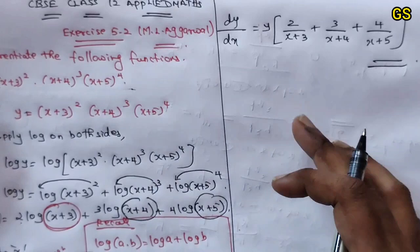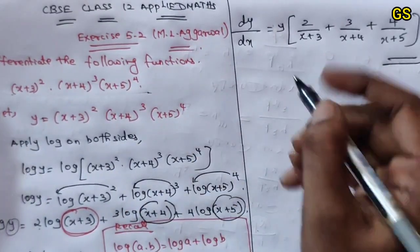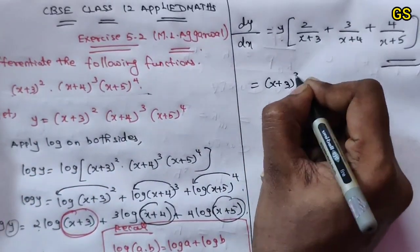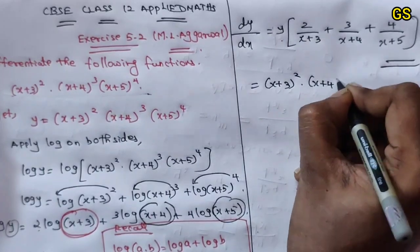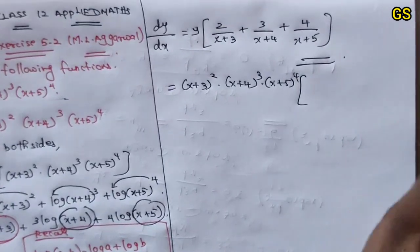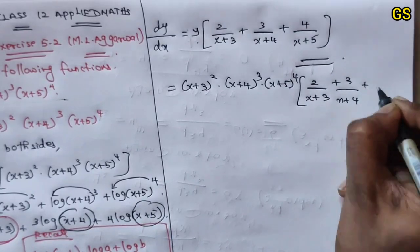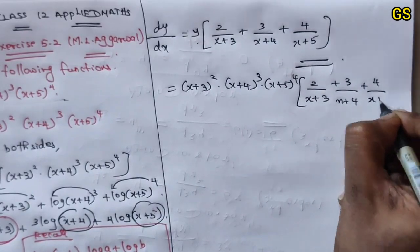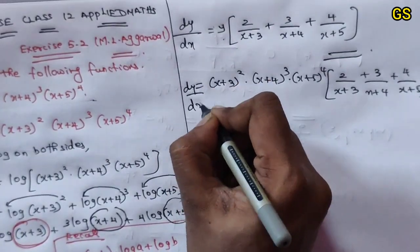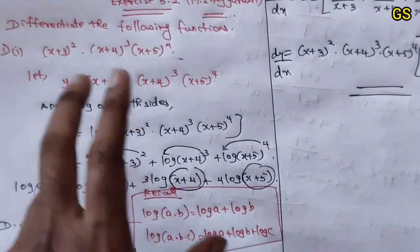So y will be equal to (x+3)² into (x+4)³ into (x+5)⁴. Therefore dy/dx equals y into [2 by (x+3) plus 3 by (x+4) plus 4 by (x+5)]. This is the dy/dx for the first problem. Now we have to do the same with functions of product.